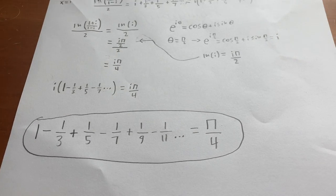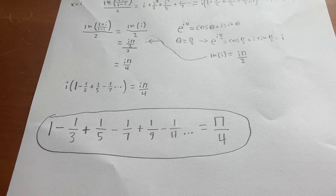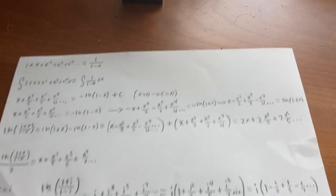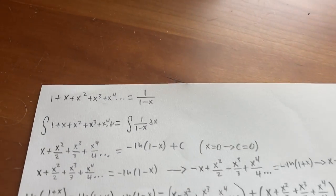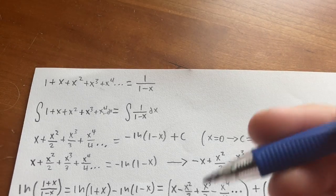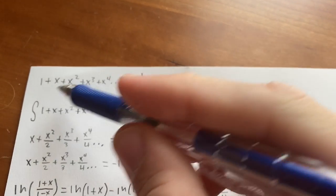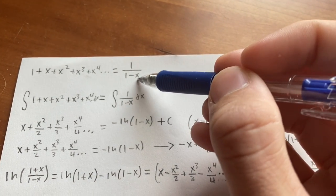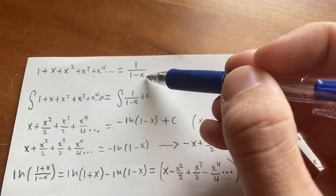So how are we going to prove this? Well, first, we are going to use the geometric series identity: 1 plus x plus x squared plus x cubed plus x to the fourth, etc., is equal to 1 divided by 1 minus x.